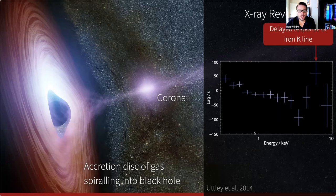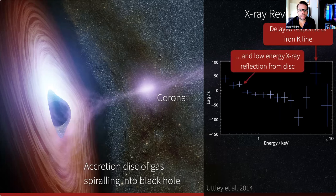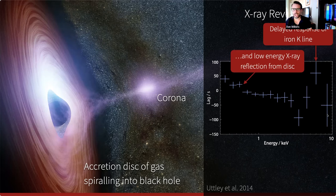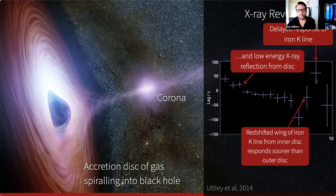In the lag-energy spectrum, energy bands most strongly dominated by direct emission from the corona respond first — they have the earliest response times. Features produced in the reflection from the disk — namely the iron K line and the Compton hump — as well as the low-energy soft X-ray excess from disk reflection, are delayed with respect to that continuum-dominated band. Also, recalling the broadened shape of the iron line with its redshifted wing coming from the inner parts of the disk closest to the black hole, we find that the response time of the redshifted wing is actually earlier than the core of the iron line. This is because the light travel time from the corona to the inner disk is less than from the corona to the outer disk.